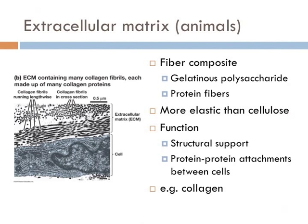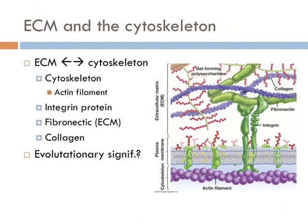In addition to structural support, the ECM also helps cells stick together and forms protein-protein attachments that link the ECM directly to the cell's cytoskeleton. The extracellular matrix is strengthened by connections to transmembrane proteins. Actin protein filaments in the cytoskeleton bind to transmembrane integrin proteins, and these integrin proteins bind to ECM proteins such as fibronectins, which then bind to collagen. Take a look at the picture.